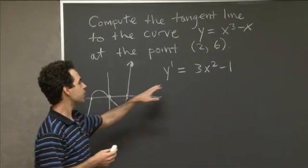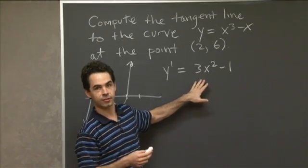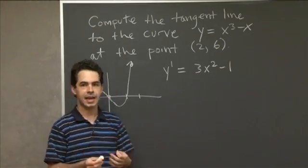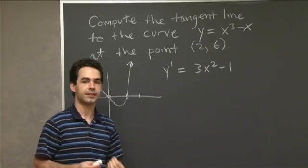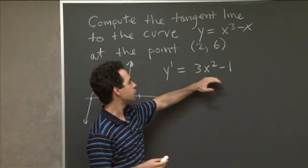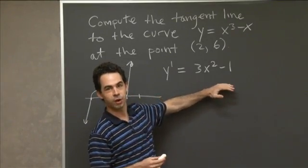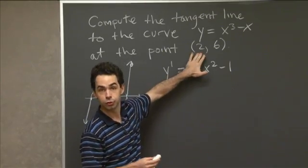This is the slope of the function in terms of x. But to compute the tangent line, we need the slope at the particular point in question. This is really important. We aren't going to use 3x² - 1 as our slope directly.